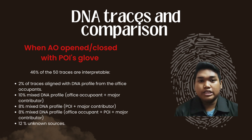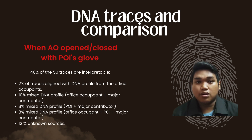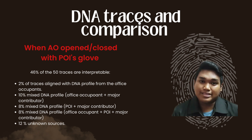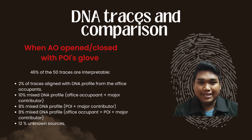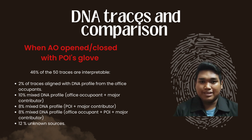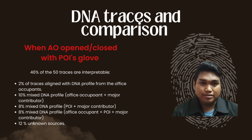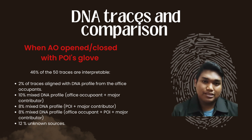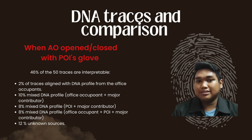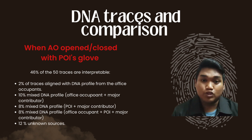When the alternative offender used gloves worn by the person of interest to open the door, the interpretable DNA forms were 46% of the 50 traces. Of these, 10% of the traces came from mixed DNA of the office occupant and the major contributor, and 8% were mixed DNA profiles involving the person of interest, the major contributor, and the office occupant. These results indicate that DNA traces on the handle can vary depending on whether the person touched with a bare hand or whether DNA was transferred from a glove.